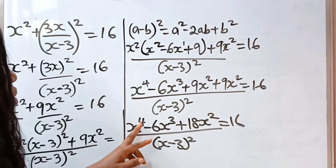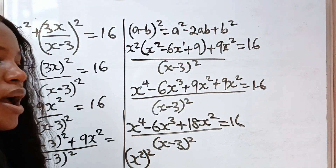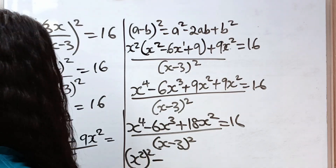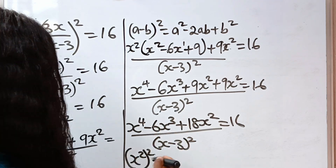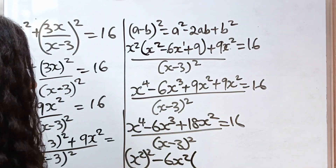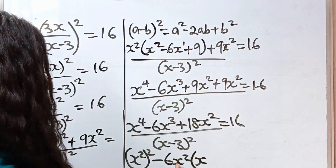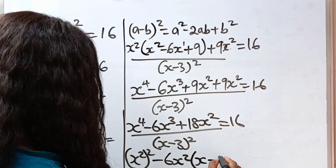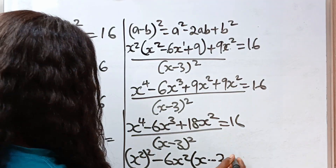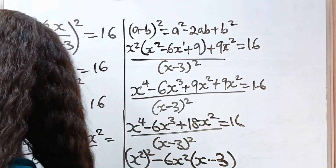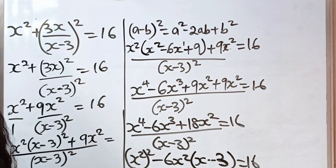Now x to the power of 4 can be factorized as x squared raised to the power of 2, because 2 times 2 still gives us 4. Now let's factorize this — this and this have 6x squared in common. So we have minus 6x squared, open bracket. When this is divided by this, x will remain, then when plus 18x squared is divided by minus 6x squared, we have minus 3 remaining. Everything divided by x minus 3 squared is equal to 16.